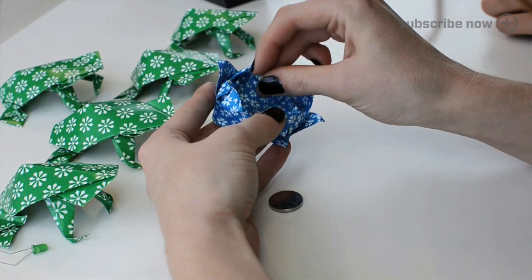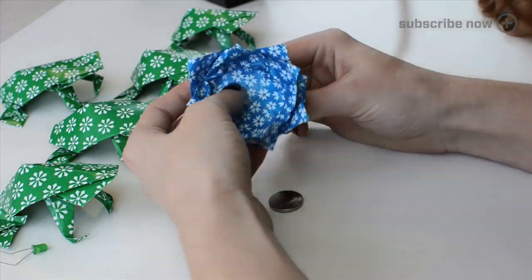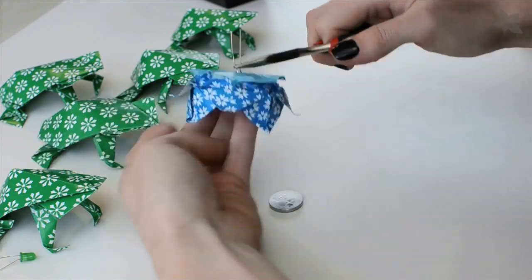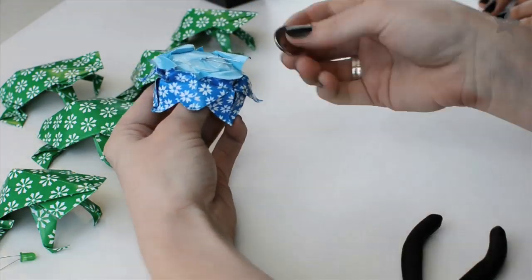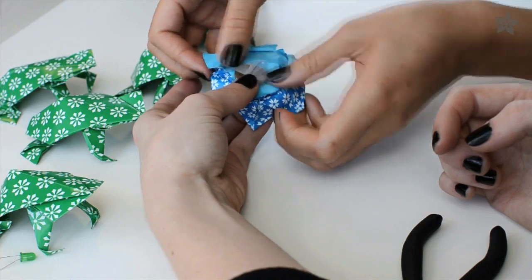Adding an LED to the flower is just as simple. Just pierce it through the center of the flower and you can reinforce the paper with a little bit of tape if you'd like. And then bend the leads over to one side and attach the battery with tape.